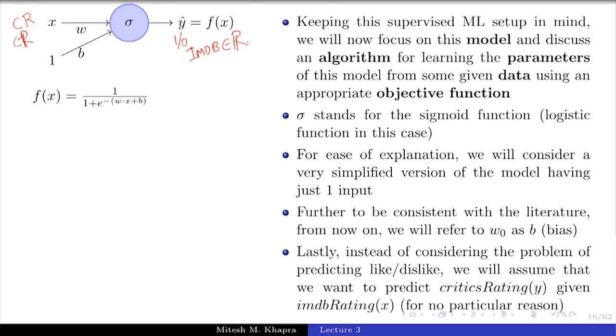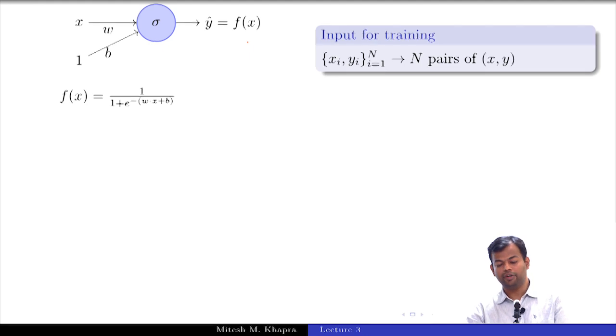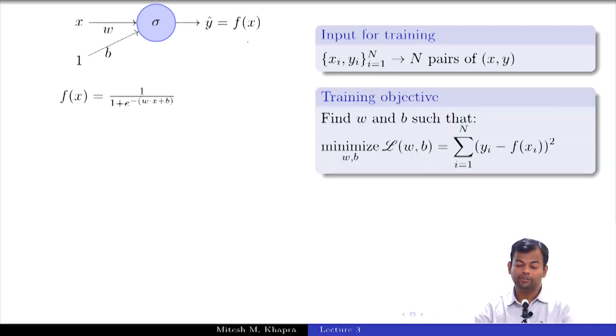So is the setup clear? We just have two parameters w and b and we are going to assume that y belongs to real numbers, it is an IMDB rating, and x also belongs to real numbers, it is a critics rating. Now let us see what we are given as training, a set of points. We are given some N training pairs. For a lot of movies I am giving the critics rating and I am also given the true IMDB rating for them. And now the training objective is such that whatever my function predicts, which is a function of w, x and b, that should be very close to the true output that I know. This is the function that I want to optimize.